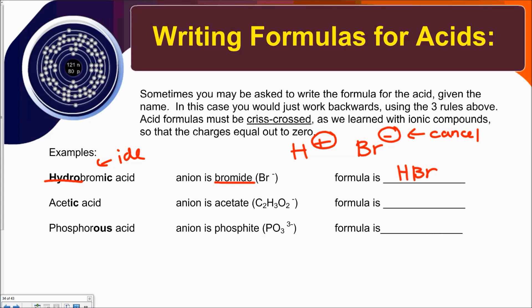For acetic acid: we change "-ic" back to "-ate," giving us acetate, which is C2H3O2 with a -1 charge. The cation is hydrogen. Crisscrossing with the same +1 and -1 charges, they cancel and smush together, giving us the formula HC2H3O2.